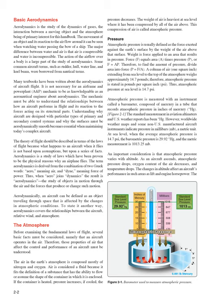The Atmosphere: Before examining the fundamental laws of flight, several basic facts must be considered, namely that an aircraft operates in the air. Therefore, those properties of air that affect the control and performance of an aircraft must be understood. The air in the earth's atmosphere is composed mostly of nitrogen and oxygen. Air is considered a fluid because it fits the definition of a substance that has the ability to flow or assume the shape of the container in which it is enclosed. If the container is heated, pressure increases; if cooled, the pressure decreases. The weight of air is heaviest at sea level, where it has been compressed by all of the air above. This compression of air is called atmospheric pressure.